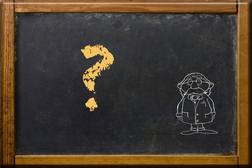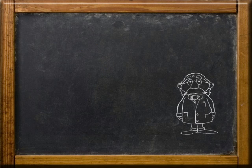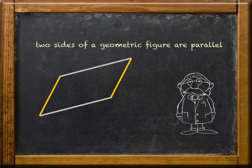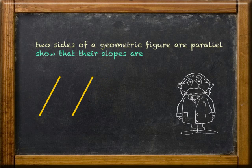So, what did we learn? Well, we learned that if you need to show that two sides of a geometric figure are parallel, we have to show that their slopes are equal. There you go.